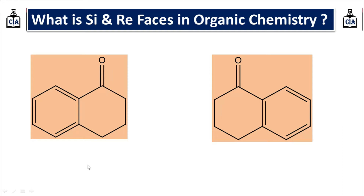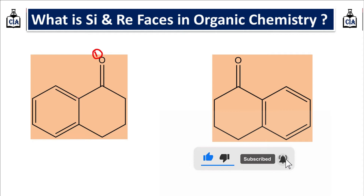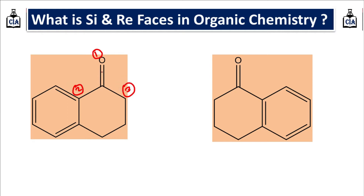Before discussing this reaction, we are going to see what the si-face and re-face are in organic chemistry. Suppose you have this ketone. For this ketone you have to give numbering according to the CIP rule, that is the Cahn-Ingold-Prelog rule. The atom having the highest atomic number gets first priority. So oxygen gets first priority, then this carbon attached to another carbon atom gets second priority, and this carbon atom gets third priority. Now check the direction of these arrows from 1 to 2 and 2 to 3 — it is anticlockwise. That face is called the si-face.